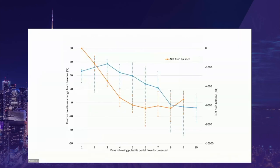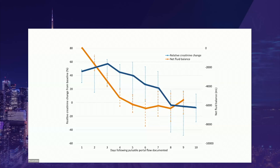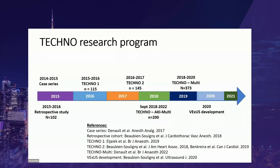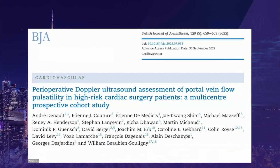We've noticed this congestion affecting not only the portal but also the renal circulation. Here is an example of a patient with significant portal pulsatility. When we removed fluid — about six liters over six to seven days — you can see a significant reduction in creatinine. The TECHNO research program resulted from observations made in the ICU and operating room. So far, more than 1,200 patients have been recruited.